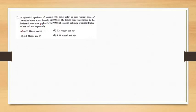This is the first question: a cylindrical specimen of saturated soil failed under an axial vertical stress of 100 kilo Newton per meter square when it was laterally unconfined. The failure plane was inclined to the horizontal plane at an angle of 45 degrees. The values of cohesion and angle of internal friction of the soil are respectively — there are four options given. So let us solve this problem.